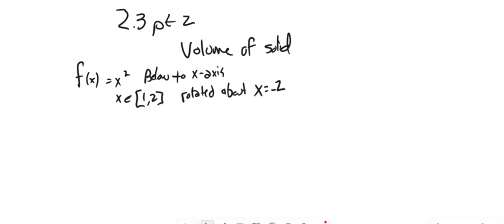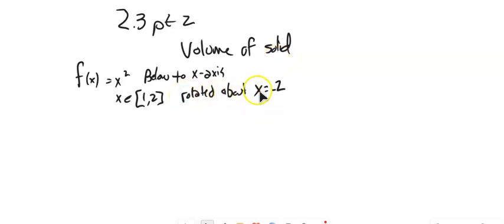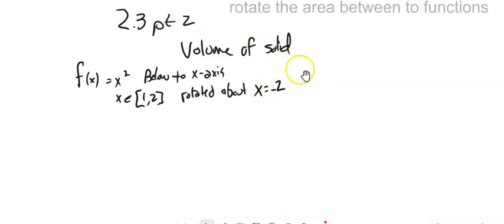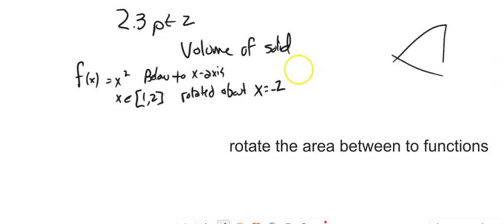This is Math 152, and we are looking at Section 2.3, Part 2. We're still doing volumes of a solid of rotation. We're going to look at two different options: what if we rotate about something other than the x or the y-axis, and what if we rotate between two shapes instead of just all the way to the x-axis?